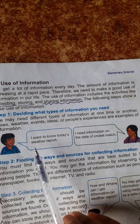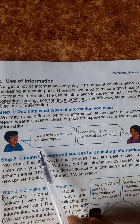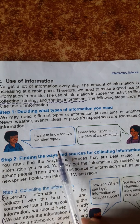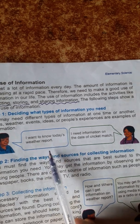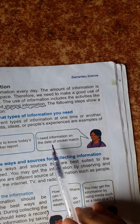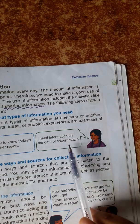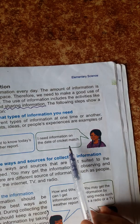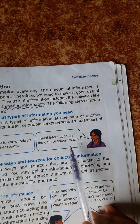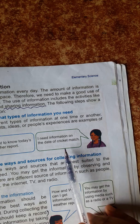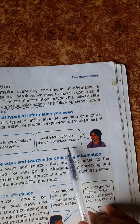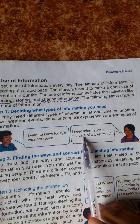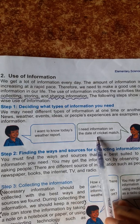For example: I want to know today's weather report. I need information on the date of a cricket match. These are examples of the types of information we might need.